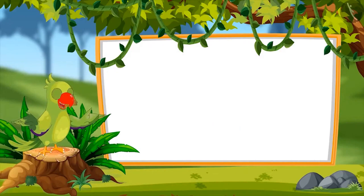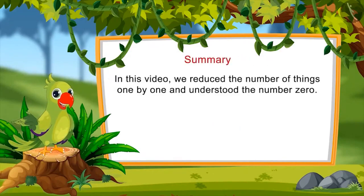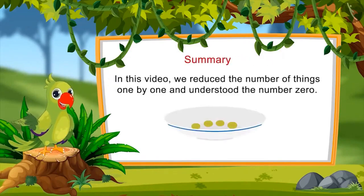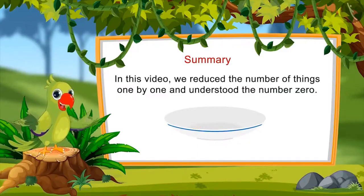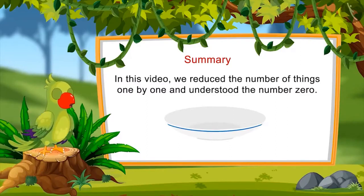So children, in this example you saw that zero quantity of anything means not even one. Can you also reduce the number of things one by one to reach the number zero? Look at things around you and reduce their number until you reach zero. That was all for today — we reduced things one by one and understood the number zero. See you in our next video, goodbye children.